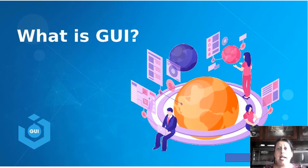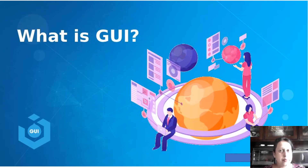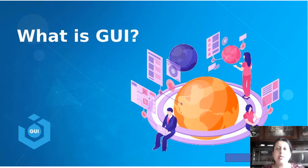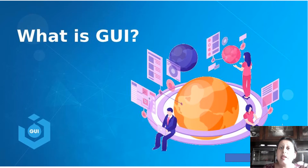Once your computer is booted and you have your desktop on your screen, you can access your computer because the operating system is loaded. We've learned about the operating systems. Then comes the application systems — that's where we, the end user, can use the computer. But how is it that we can access the application system?